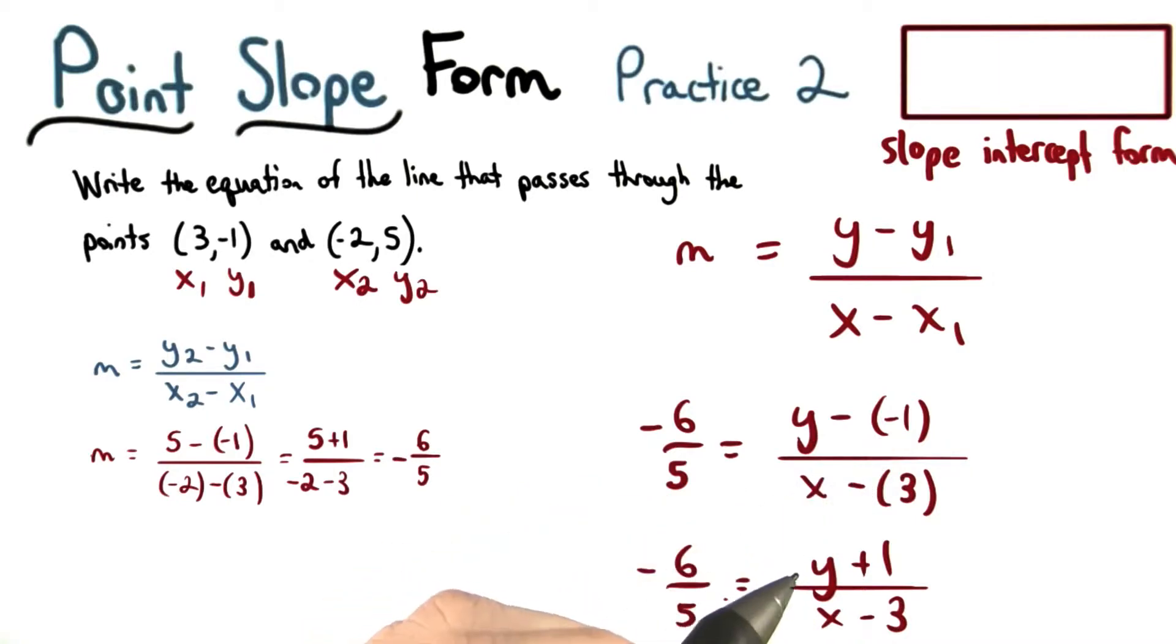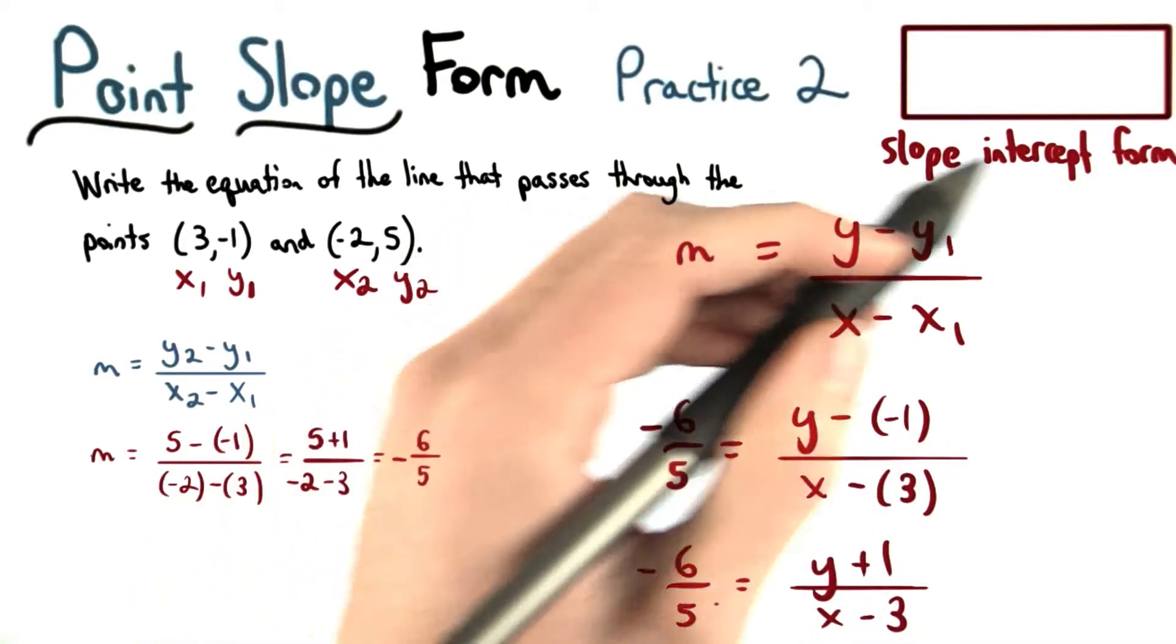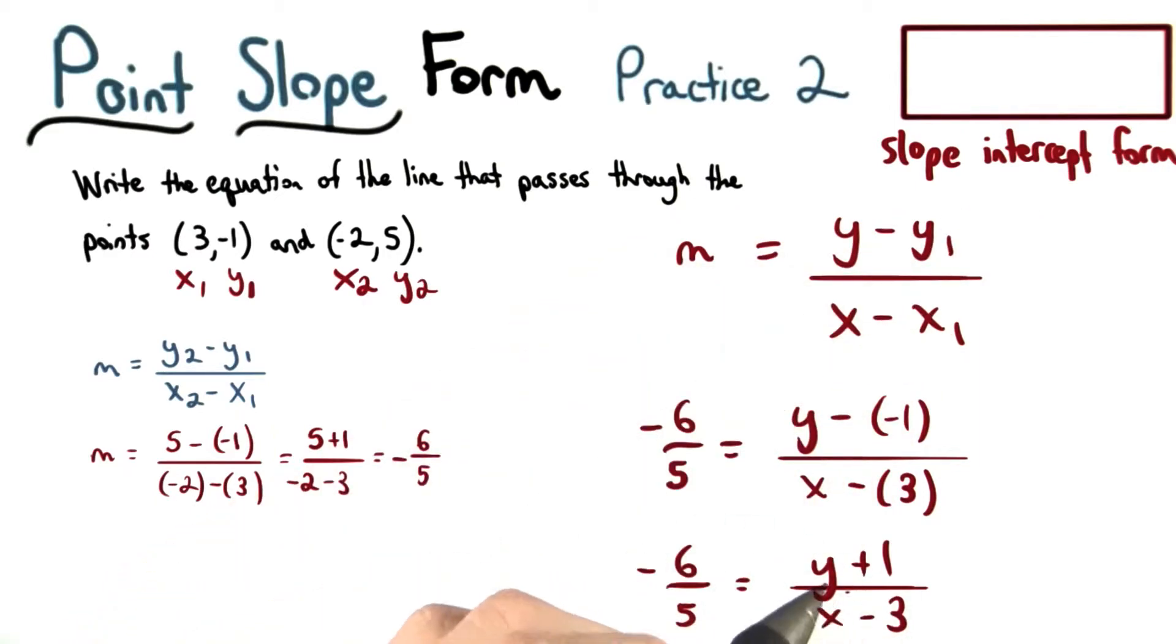Simplifying the y minus negative 1, I get y plus 1. Now that we're here, we want to find an equation in slope intercept form. So we want to solve this equation for y.